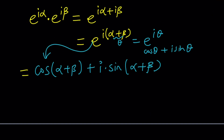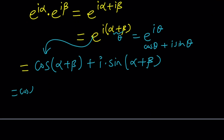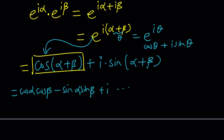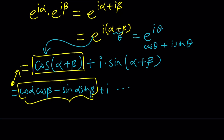And this is equal to cosine alpha cosine beta minus sine alpha sine beta plus I times the imaginary part. We're trying to find cosine of alpha plus beta, which is the real part of this number. The real parts of both expressions must be equal since the two expressions are equal. Therefore, cosine alpha plus beta equals cosine alpha cosine beta minus sine alpha sine beta.